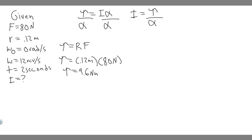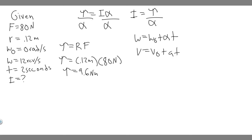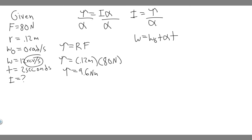Now we need to solve for alpha using the rotational kinematic variables. We're given omega-zero, omega, and t, so the equation to use is omega equals omega-zero plus alpha times t — just like v equals v-naught plus a times t, but with rotational variables. We need to make sure omega is in radians per second; right now it's in revolutions per second, so we need to convert.